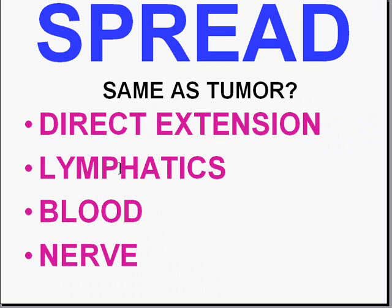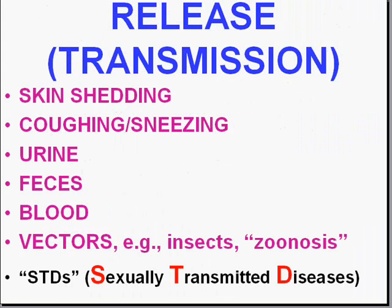Pathogens and inflammatory processes can get into the bloodstream — and of course, everywhere the blood goes, pathogens can go too. They can also follow nerve tracks or nerve sheaths as well. This is exactly the same pattern we see with malignant tumors.